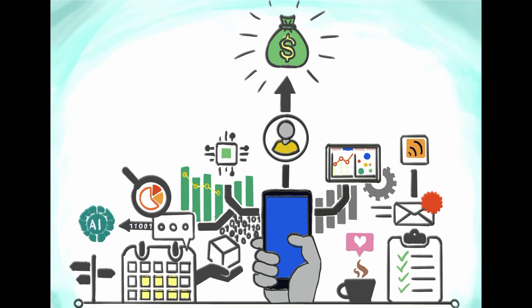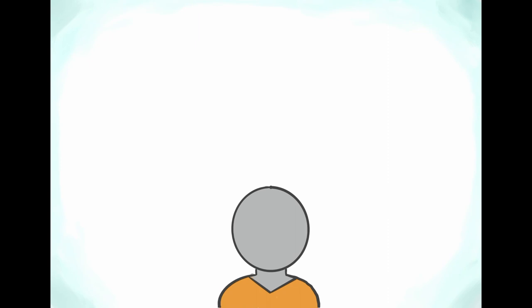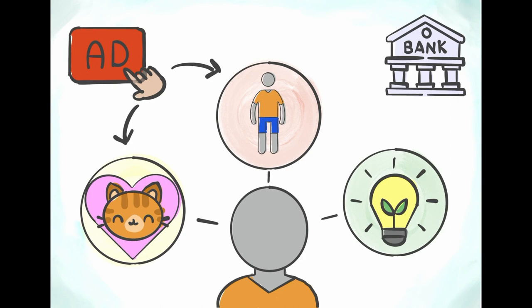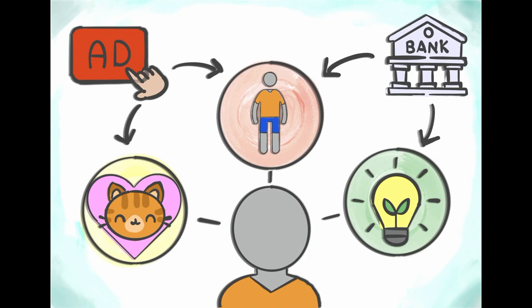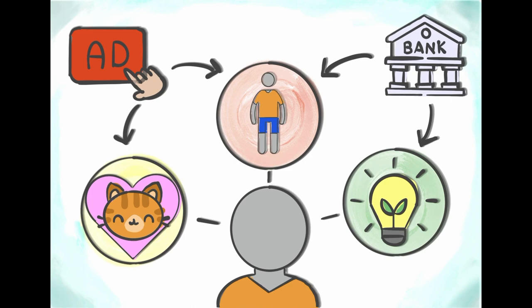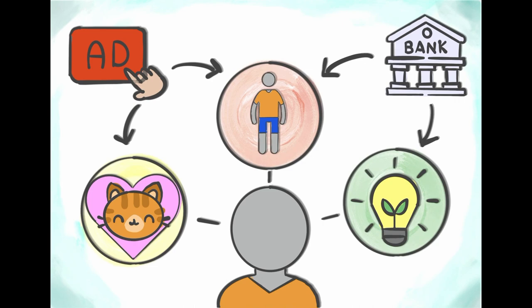With this data a profile of you is created which contains who you are, how you think and what you like. These profiles can be sold to companies which can send you targeted advertisement or could have another interest in you, like for example a bank which wants to see if you're worthy of a loan. If you want to experience how advanced these profiling techniques are today I would recommend you the interactive documentation Do Not Track which I will put in the description.